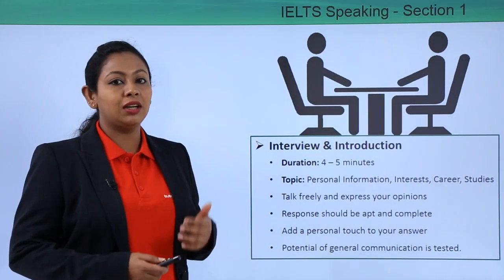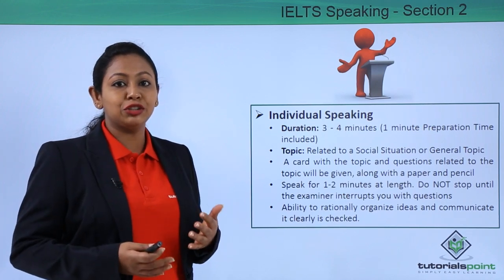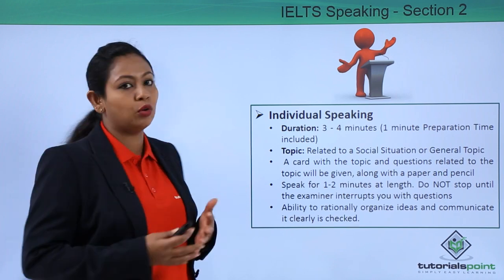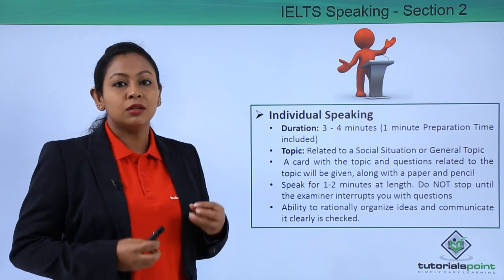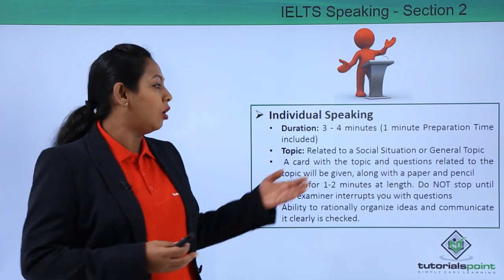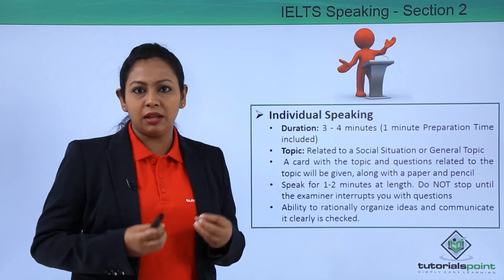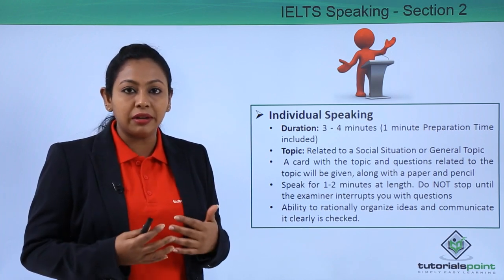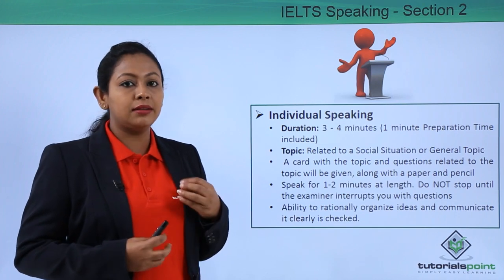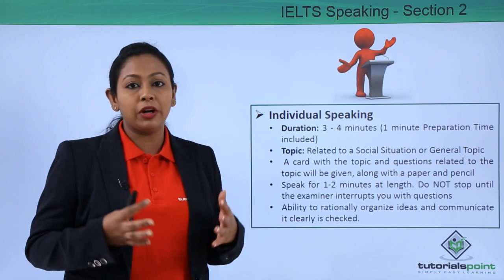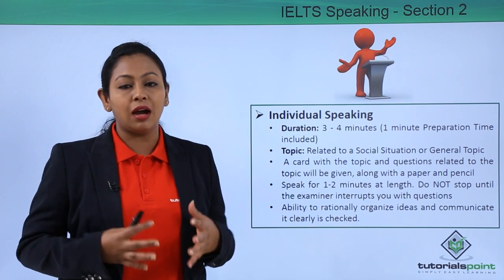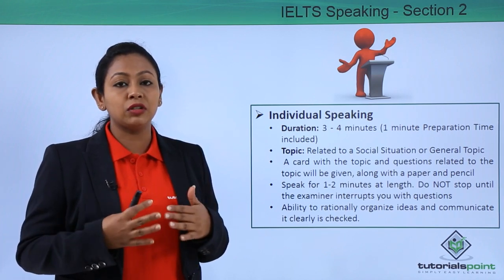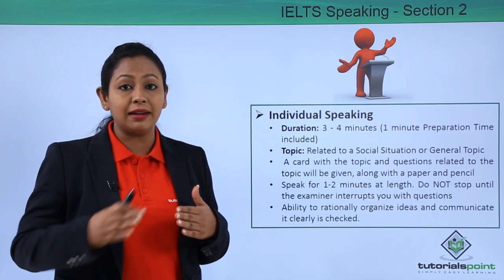Section 2 is basically an individual speaking round which lasts for a duration of three to four minutes, including one minute of preparation time. The topics are of social or general interest — it could be daily news, social topics, current trends, or current affairs. You will be given a card, a paper, and a pencil by the examiner. The card will have the topic on which you have to speak and questions related to that. You have to speak for one to two minutes at length.